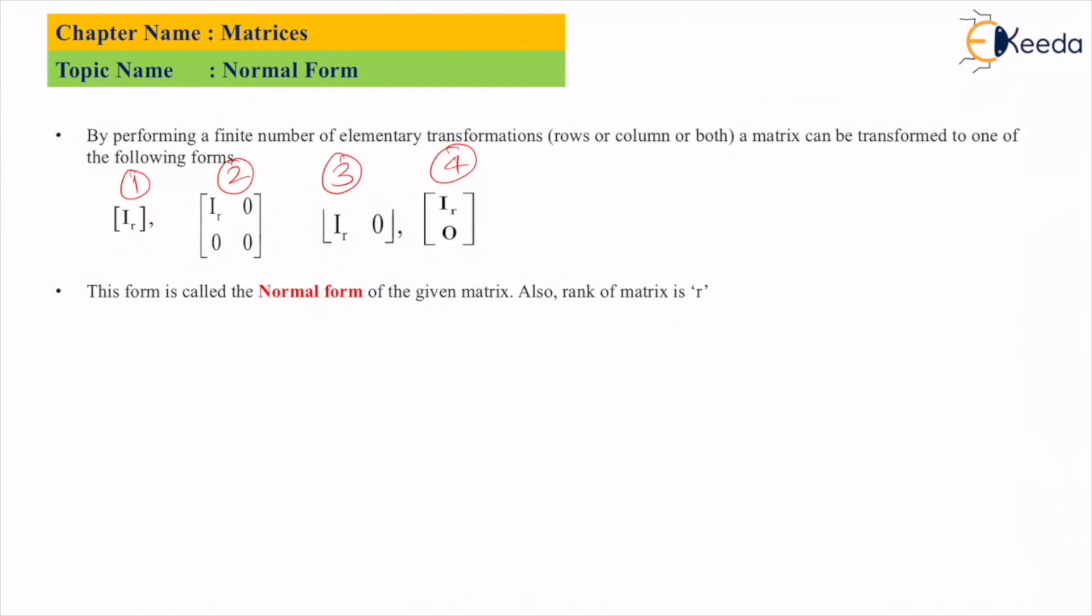Now let's understand these four forms. In the first form, you can see we have written I_r inside the matrix. I stands for identity matrix and r is the rank of the identity matrix.